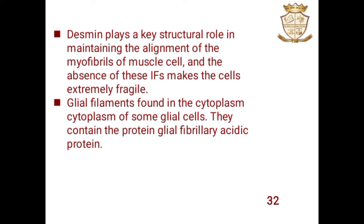Vimentin is made up of the protein vimentin, found in differentiating animal cells and particularly mesenchymal cells. Synemin filaments are formed of the protein synemin and found in muscle cells together with desmin and vimentin filaments. These are all about intermediate filaments and cytoskeleton — the three structures: microtubules, microfilaments, and intermediate filaments, and their functions.